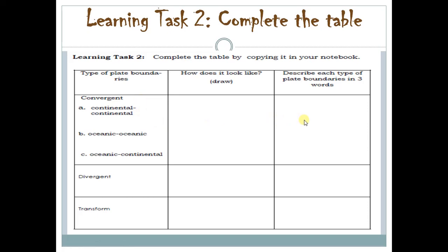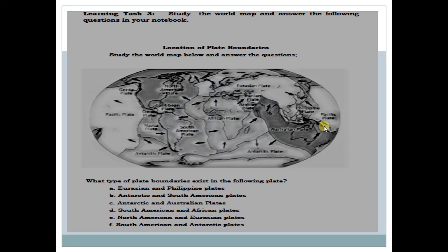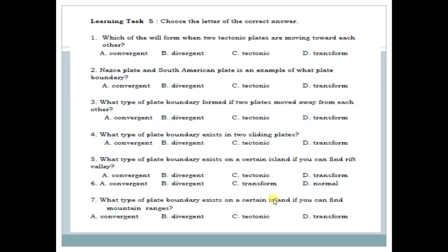Hopefully, by the images shown, you will be able to draw the different images depicted by these different types of plate boundary, and describe each type of plate boundary in three words — or more. For your learning task three, you have to study the world map and determine what type of plate boundaries exist in the following plates. If you listened to the discussion, I already mentioned these plate boundaries and what type they form between adjacent plates. You can go back to this video to locate or recall that specific part, and I mentioned the type of plate boundaries being formed in the plates mentioned in learning task number three. Lastly, choose the letter of the correct answer in the short multiple-choice questions for your learning task.